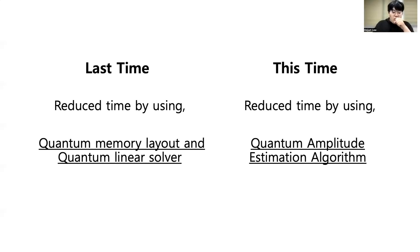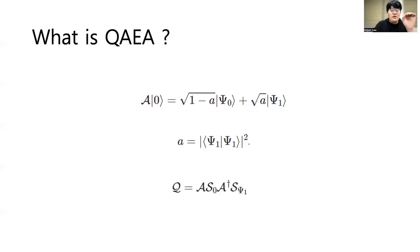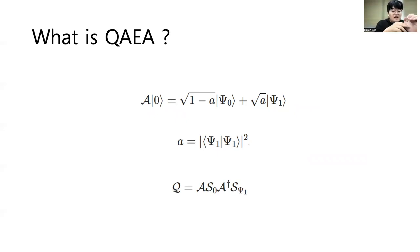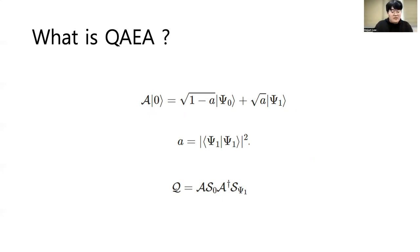We call it QAEA. Let's say there is an operator A as shown on the slide, and our main goal is to estimate the amplitude of |ψ₁⟩. To estimate this amplitude value 'a', we can use this Q operator, which is a combination of A and some kind of reflection over |ψ₁⟩ and |0⟩. By using these kinds of operators we can estimate the amplitude. Now I'll introduce how this algorithm is used to find the solution of Burgers' equation.